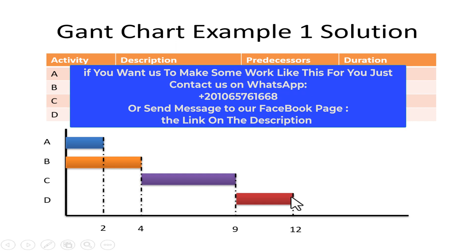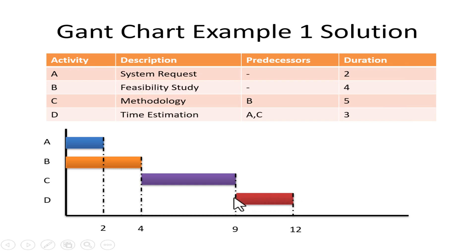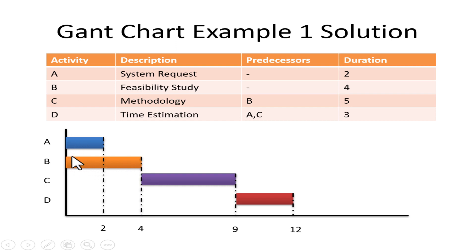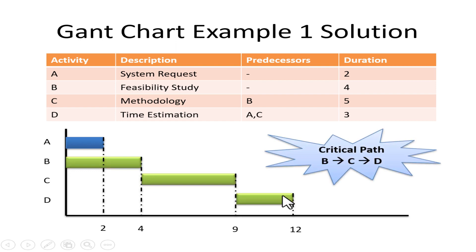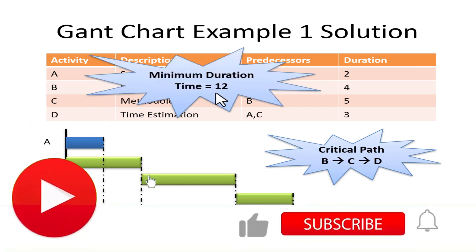To find the critical path, I begin from the end — the last activity — and trace back to its beginning. Then I go to the previous activity and trace through it to its end. I cannot jump to the middle of an activity; I must go all the way through it. So I will not go to activity A. The critical path is B, C, D, and the minimum duration is 12.